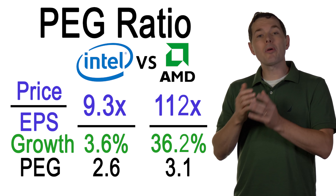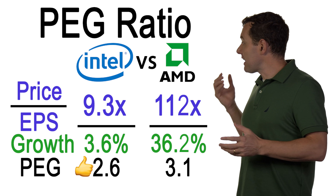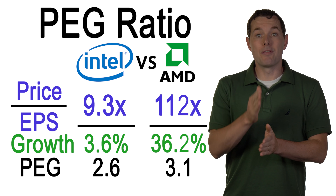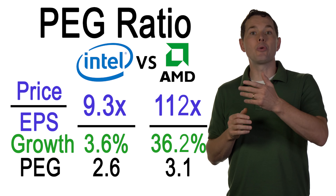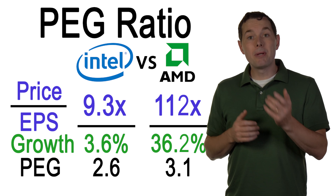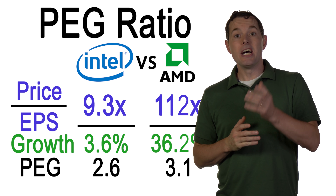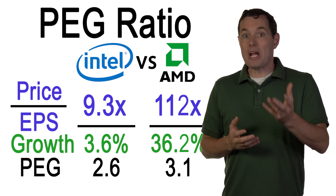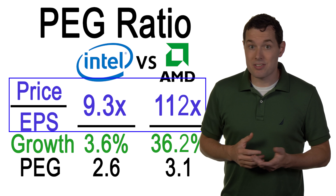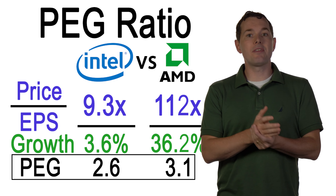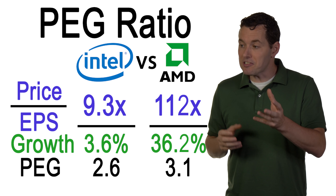Now we should recognize that the lower the PEG ratio, the better. So for Intel, we are paying a PE of 2.6 times each unit of growth. So are we willing to pay 2.6 times each unit of growth? And for AMD, we're paying a PE of 3.1 per each unit of growth. And this is one of the advantages of the PEG ratio. Initially the numbers looked insane — if we were only looking at the PE ratio, we'd go with Intel hands down. But thanks to the PEG ratio, we can see that relative to Intel, AMD may not be quite as overpriced as we originally thought, since they have much better growth.